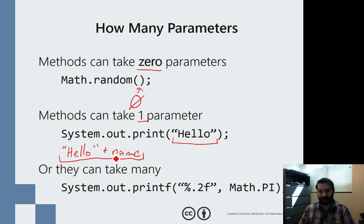Or, just like we saw with the distance formula, I can take as many as I want. System.out.printf takes a string and then it takes some large number of numbers or strings. It takes multiple parameters.